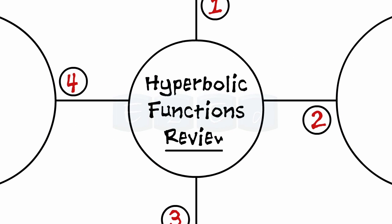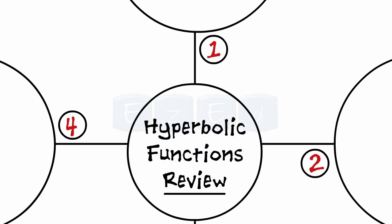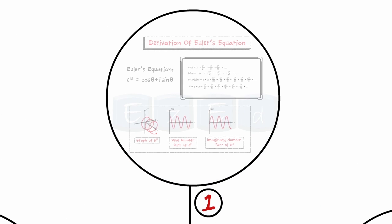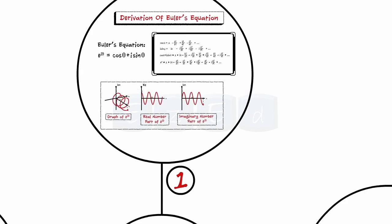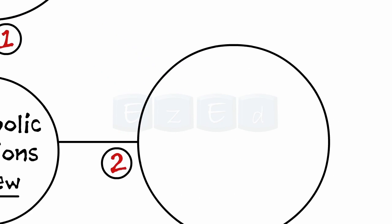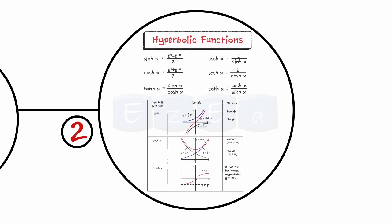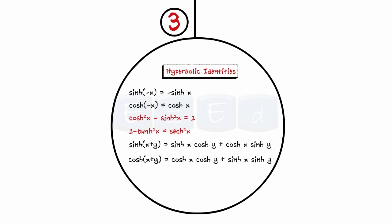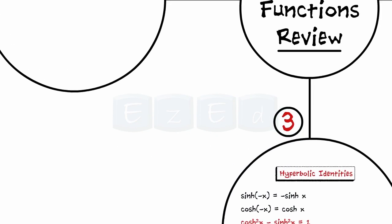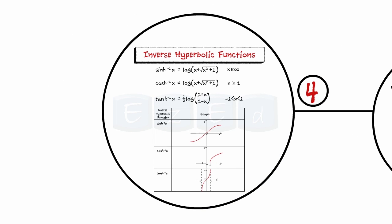Let us have a quick review of what we studied in this lecture. We studied the derivation of Euler's equation, then moved on to hyperbolic functions and their graphs, then hyperbolic identities, and finally the inverse hyperbolic functions and their graphs.